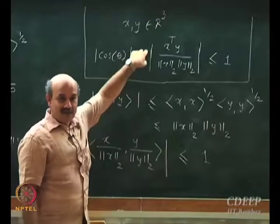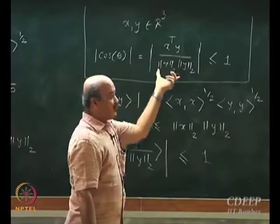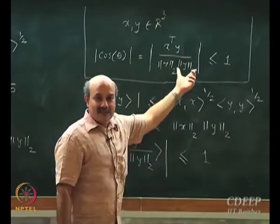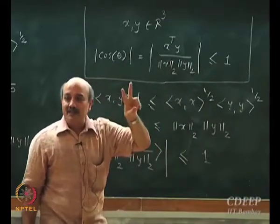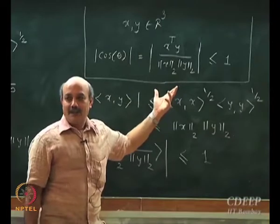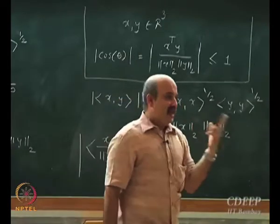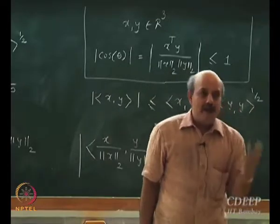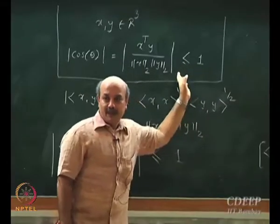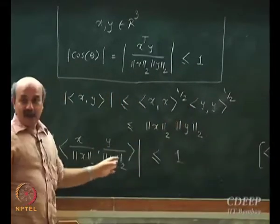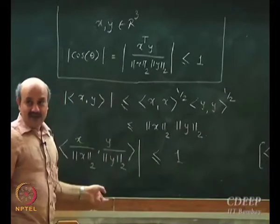Take two unit vectors in three dimensions and take their inner product — you get cosine theta. That is exactly what I have arrived at. In any inner product space, the same inequality holds, no difference. So now I am going to define an angle in any inner product space.